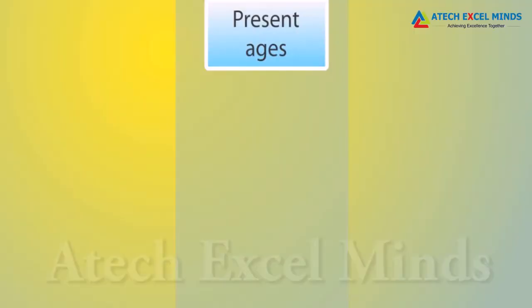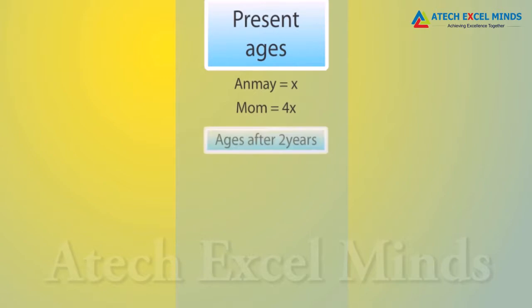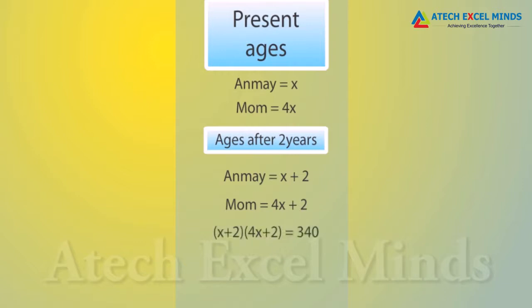Let x and 4x be the present ages of Anmay and his mom. Then, after 2 years, their ages will be x plus 2 and 4x plus 2 respectively. The product of (x + 2) and (4x + 2) is given as 340. On simplification, we get 4x² + 10x − 336 = 0.